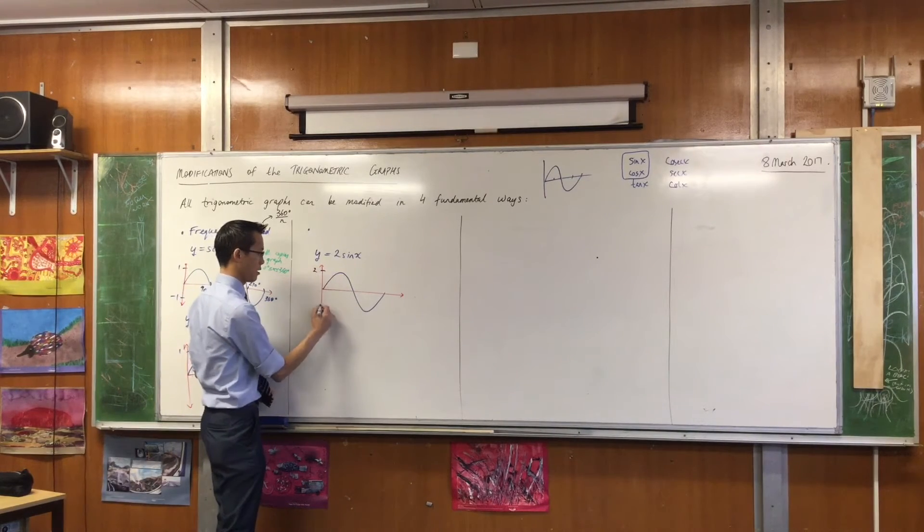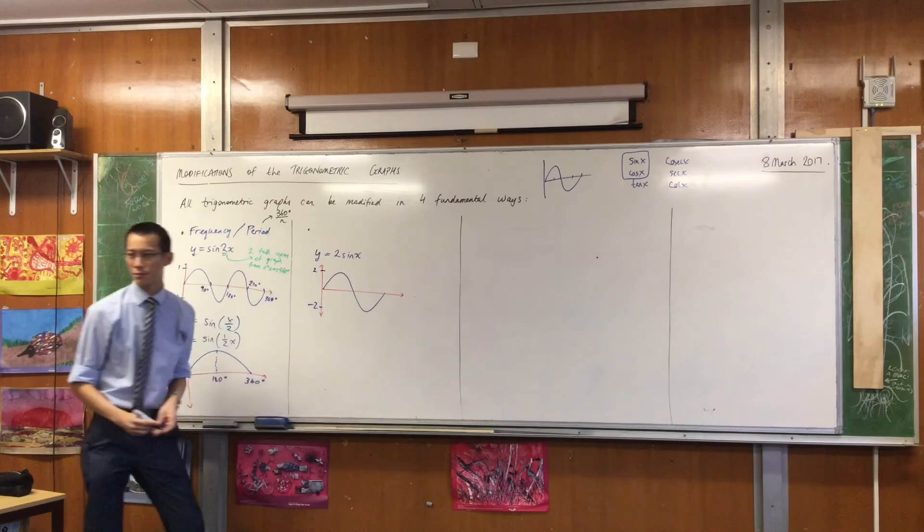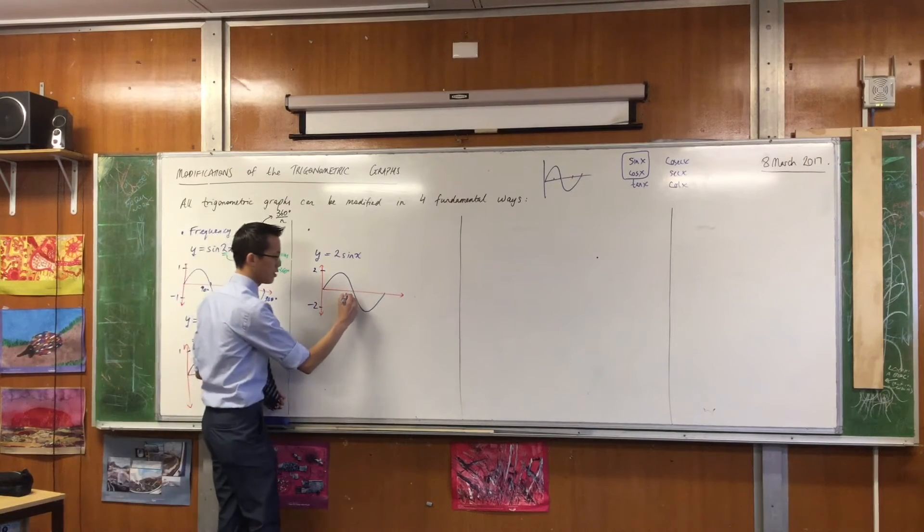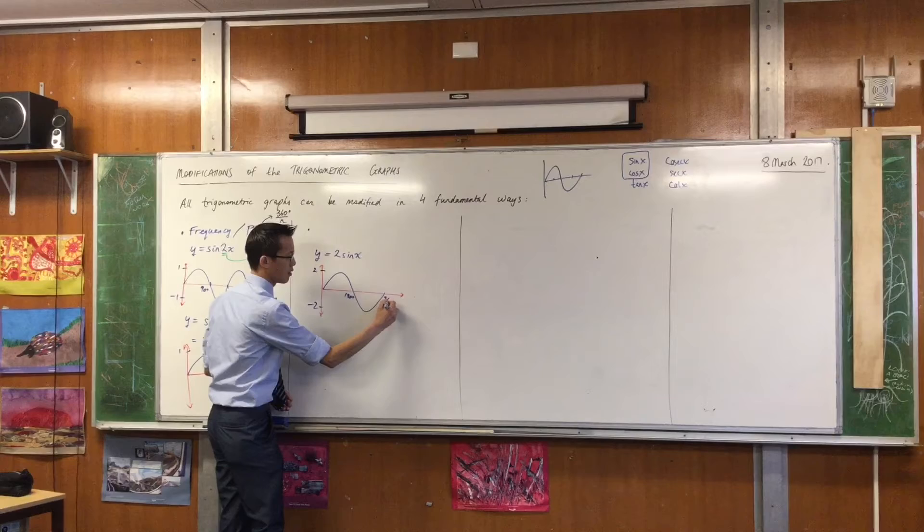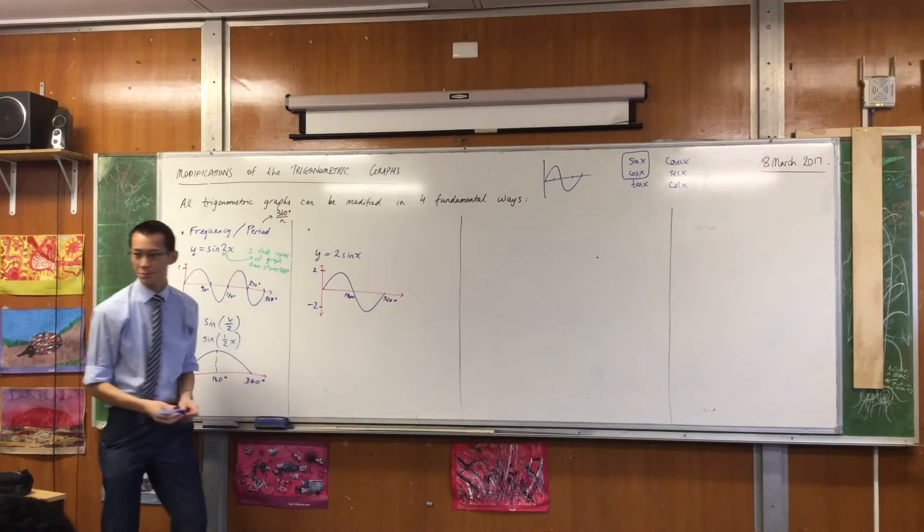Do you see that? So this is 2, and this is negative 2. Everything else is what it was on the original curve.